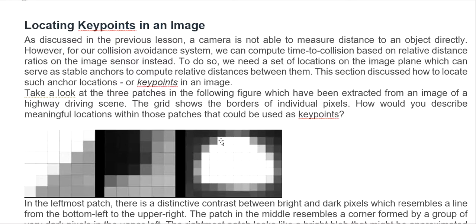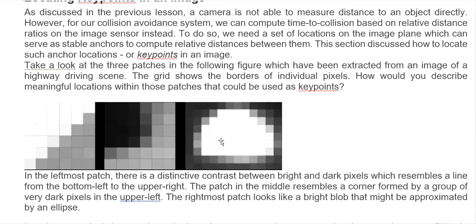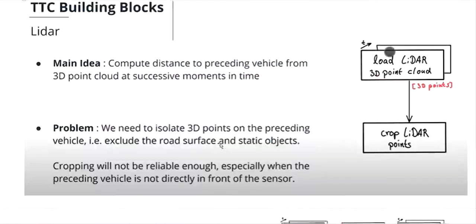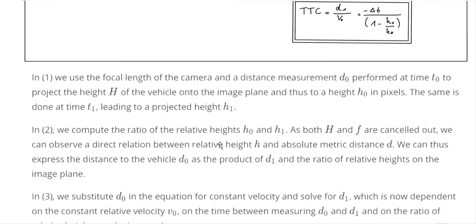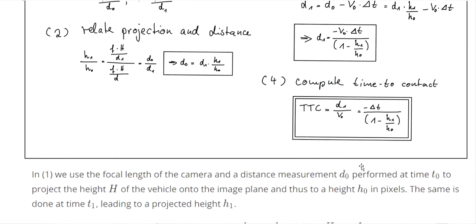We also know the camera is not able to measure distance to the object directly. And for our collision avoidance system, we compute the time to collision, which relies on the relative distance ratio of the image sensor. I will go back a little bit to show you a formula to calculate the time to collision.